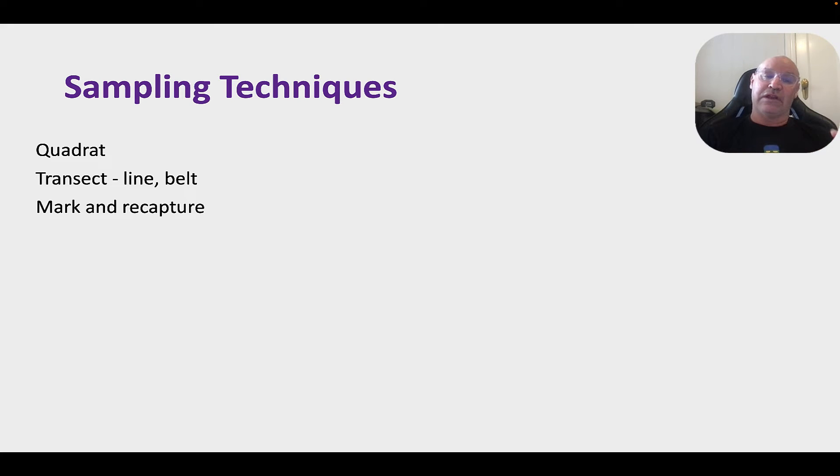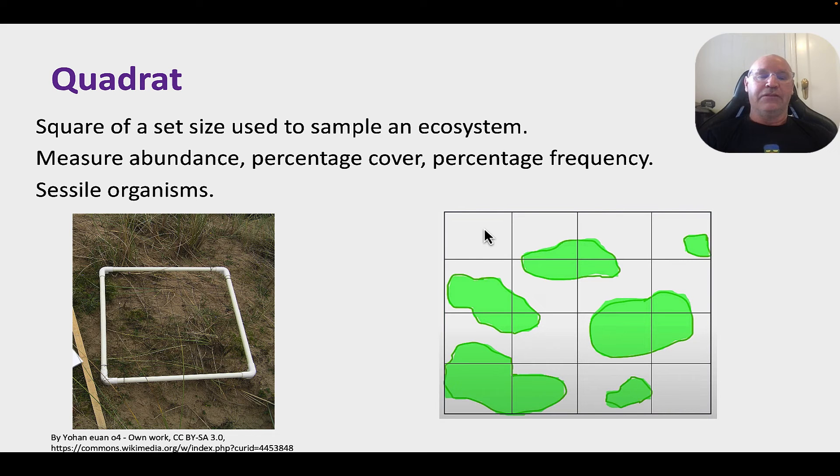So, that were the sampling strategies. Now, we have sampling techniques. The quadrat, the transect, and also mark and recapture. So, a quadrat is basically it's a square of a set size. And it's used to sample the ecosystem, sample what's inside the quadrat. Now, the quadrat size is going to vary depending on your ecosystem. So, if you're doing a rocky shore ecosystem, one by one meter would be perfect. But if you're doing a dry sclerophyll forest, you want to use a 10 by 10 meter quadrat or something similar. Maybe five by five or something. But it needs to be a set size.